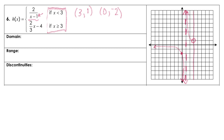Now we need the other portion of the graph. For that portion, we are still going to substitute in 3. When we plug that in, we have 2 thirds times 3 — keeping numerator and denominator separate — that's going to give us negative 2. So we have (3, negative 2). Go over 3, down 2, and make our closed circle. From there we count off our slope, which is 2 thirds — rise 2, run 3 — and connect those points.